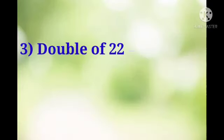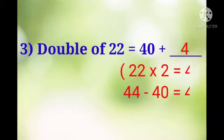Now number 3. Double of 22 equal to 40 plus dash. So children, first we will find out the double of 22, that is 44, and in 40 how much we will add? Yes, we will add 4, then we will get total 44.